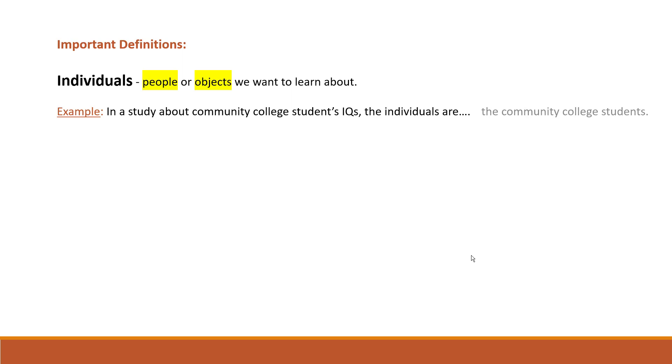Next, let's learn a few more important definitions. We already mentioned the word individuals. Well, here it's defined officially. Individuals are people or objects we want to learn about. Again, it's important to note that in statistics, objects are also called individuals. For example, in a study about community college students' IQs, the individuals are the community college students.